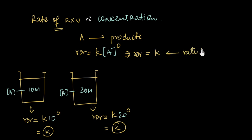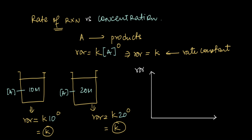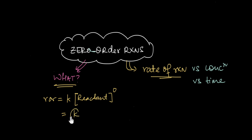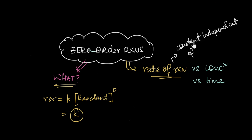So whatever the concentration of the reactants, the rate of a zero order reaction will always be equal to k. If I plot a graph of rate of reaction versus concentration of the reactant, it will be a straight horizontal line at k — the rate of the reaction is constant, independent of the concentration of the reactant.